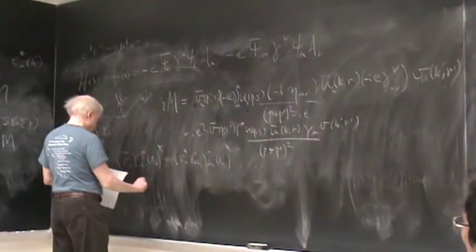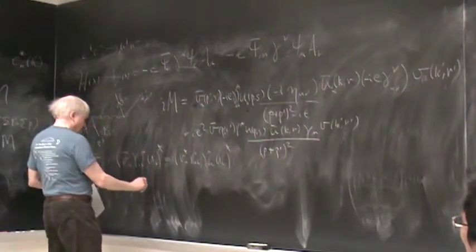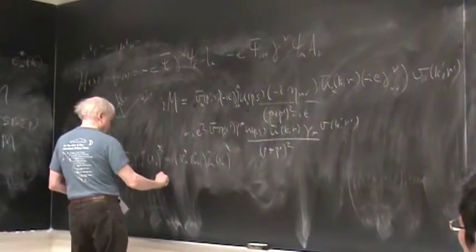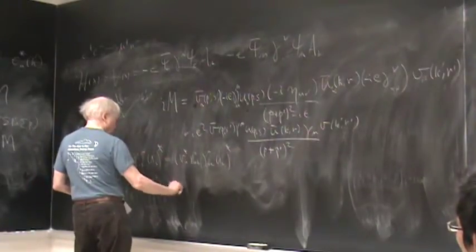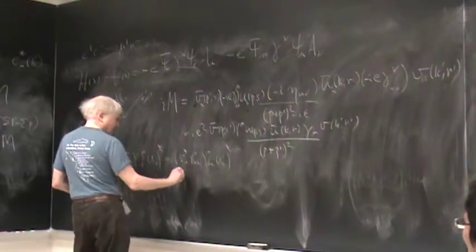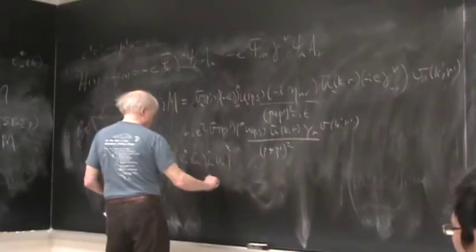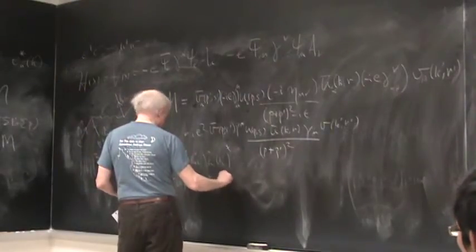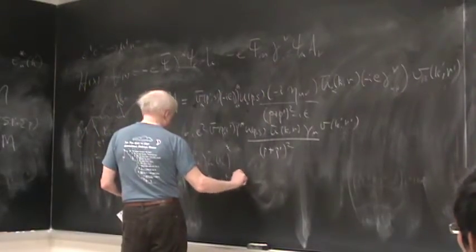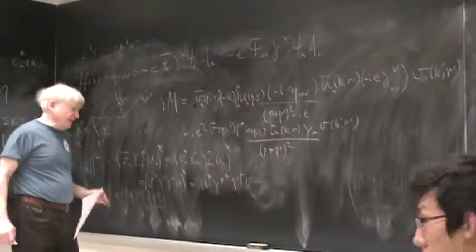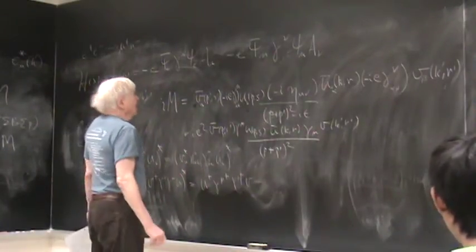But this thing is already a bit complicated. In other words it's actually v*_a (γ⁰)_ab (γ^μ)_bc u*_c. But if we go back to matrix notation, this thing is v† γ⁰ γ^μ u. And now we're taking the complex conjugate.